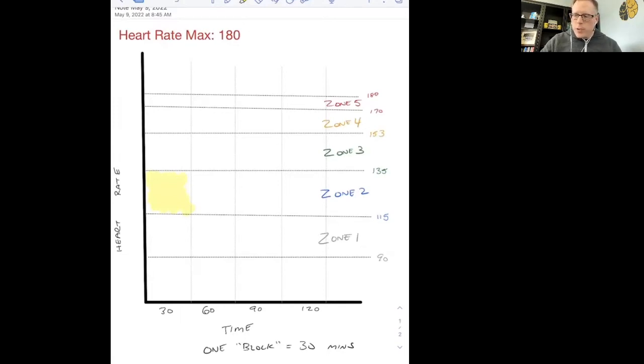So this person, if we took all their zones and we broke them down by number, we would see that they're entering zone two around 115 beats per minute. And as long as they stay under 135, they're going to stay within zone two.